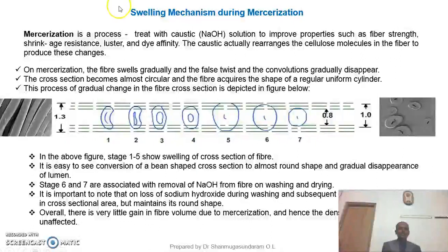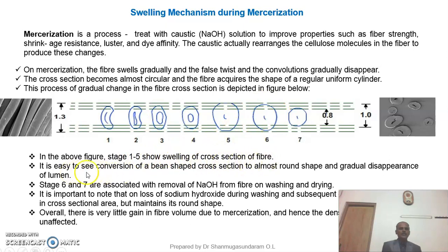Now I would like to discuss the swelling mechanism in the mercerization process. On mercerization, the fiber swells gradually and the false twist and convolutions gradually disappear. The cross-section becomes almost circular and the fiber acquires the shape of a regular, uniform cylinder. Please look at the figure — there is a gradual change in cross-section of cotton fiber from bean-shaped to circular. Stages 1 to 5 show the swelling of the cross-section of the fiber, demonstrating the conversion from bean-shaped to a cylindrical cross-section, with a gradual disappearance of the lumen.